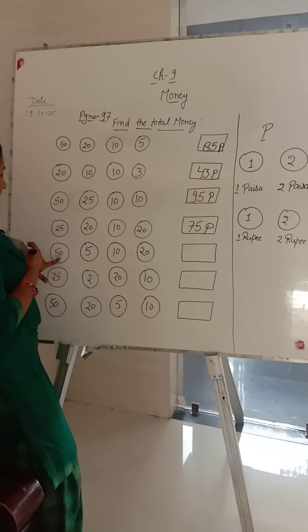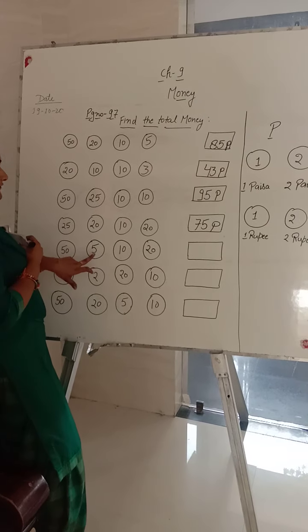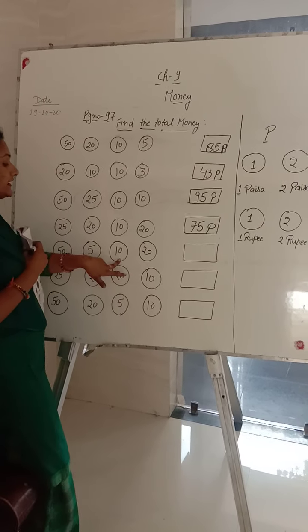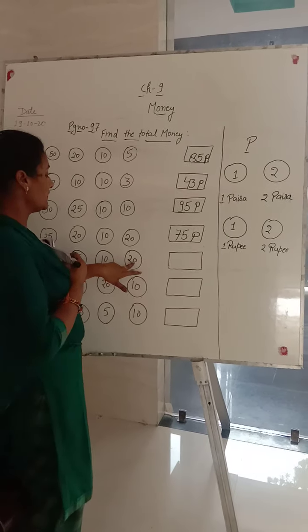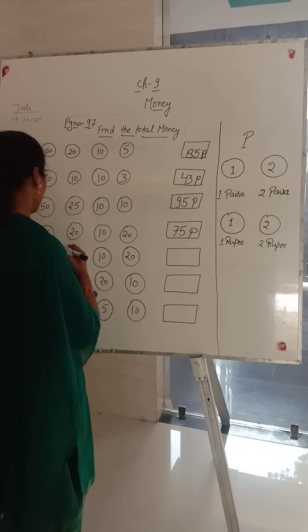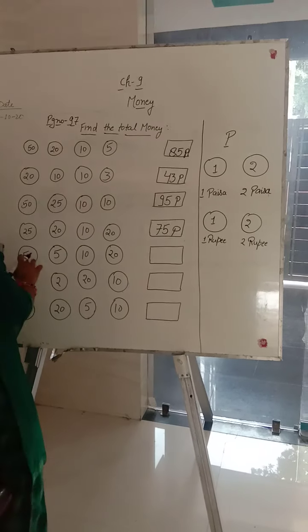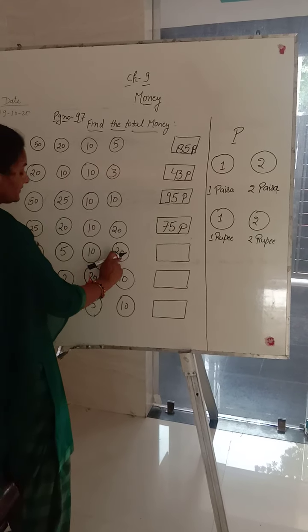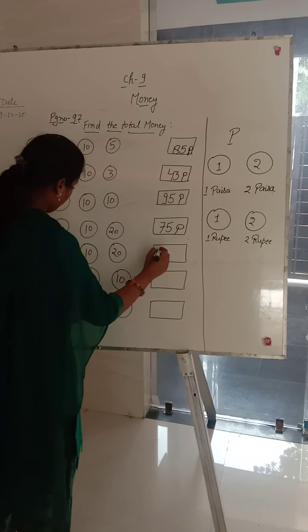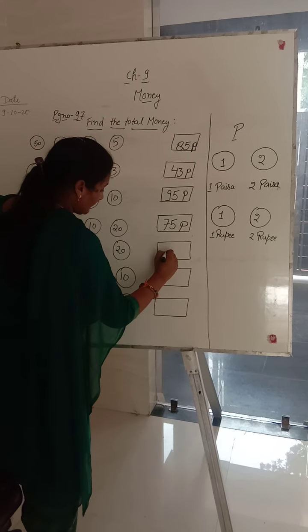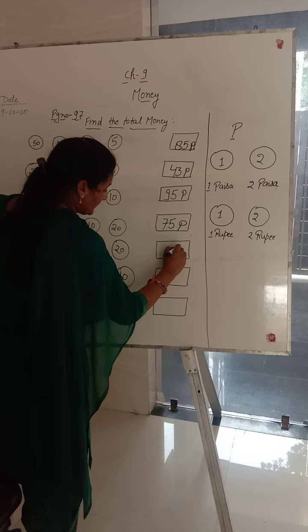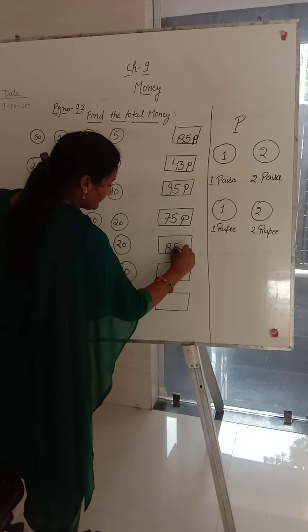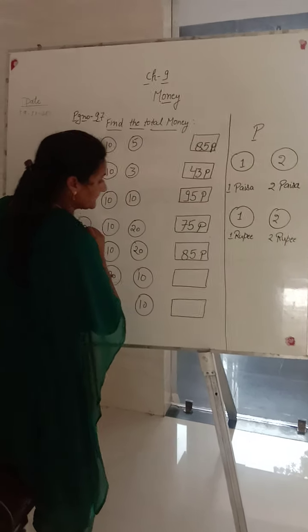Next is 50 paisa, 5 paisa, 10 paisa and 20 paisa. Total gaya hain: 50, 60, 70, 80 plus 5 — 85 paisa.